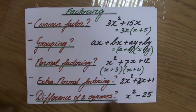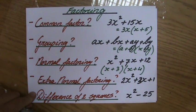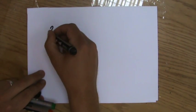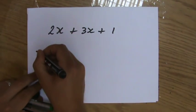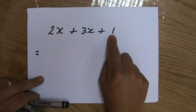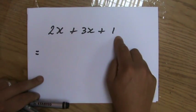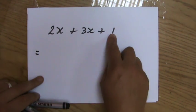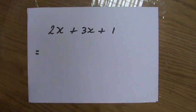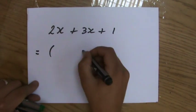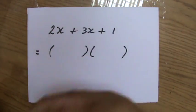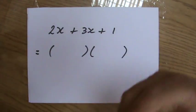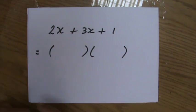So we are going to solve this question now together: 2x squared plus 3x plus 1. Every time I ask myself the questions: is there a common factor? No. Is it grouping? No. Is it normal factoring? No. So it is the extra normal factoring. Make sure you've seen my previous videos — it all makes sense. If you ask yourself these questions every time, it goes quicker and quicker, and you will be a superstar in factoring.